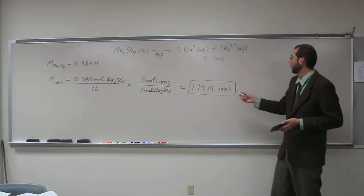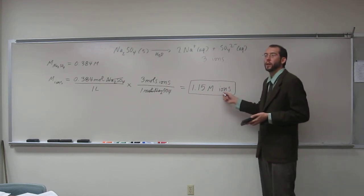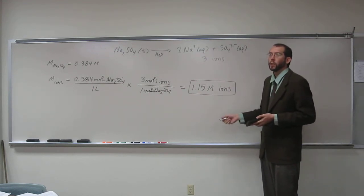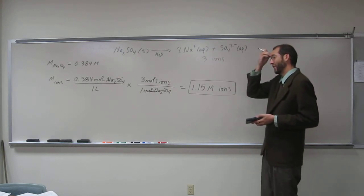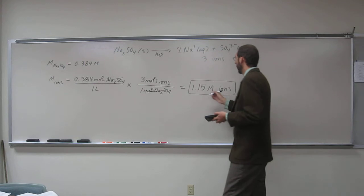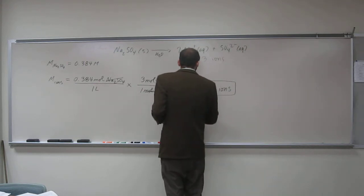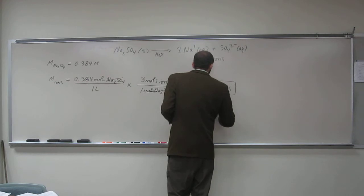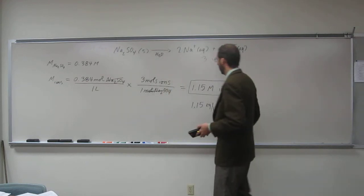Oftentimes you'll see this when you're referring to ions as equivalents per liter. So that's another concentration unit that you might see. So in other words, since it's ions, it would be like 1.15 equivalents per liter of ions.